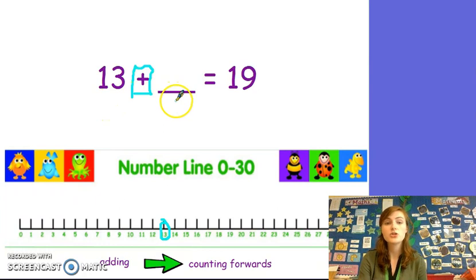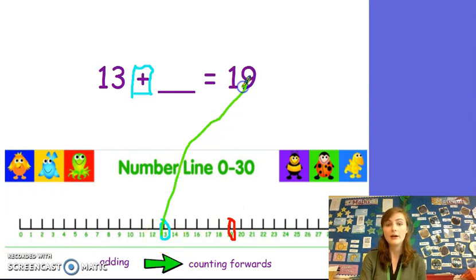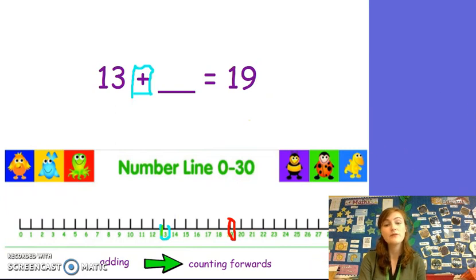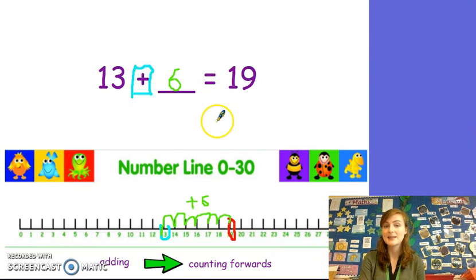13 plus something equals 19. My total is 19. That is where I am going to stop on my number line, so I am going to draw another circle around it. When I know where I am going to start — 13 — and where I am going to stop — my total, 19 — then I can start counting forwards on my number line. Can you help me? 1, 2, 3, 4, 5, 6. I have jumped a total of 6 numbers from 13 to 19. This must mean that my missing number is 6. 13 plus 6 equals 19.